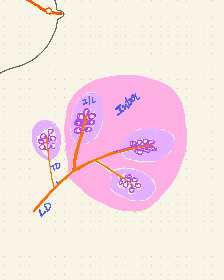When you zoom in, this is the terminal duct which branches ultimately into the terminal ducts. Each terminal duct at the tip has a lobule — the light lavender area is the lobule. This lobule contains many acini.